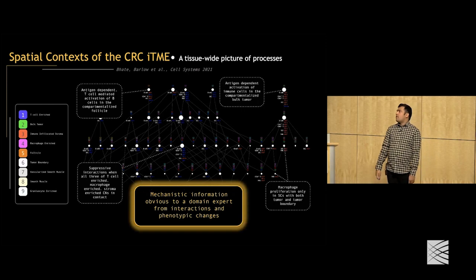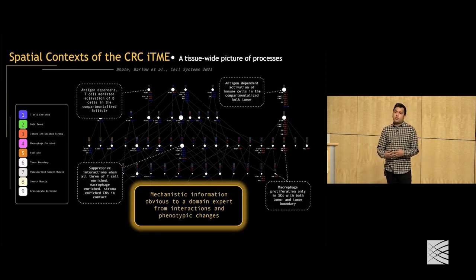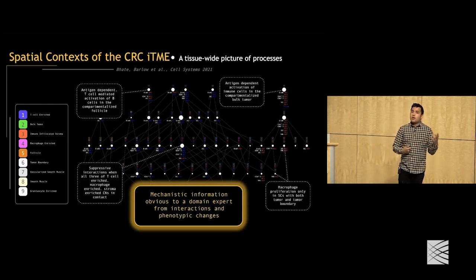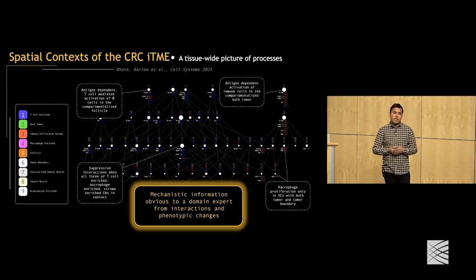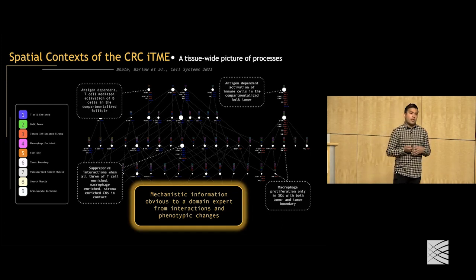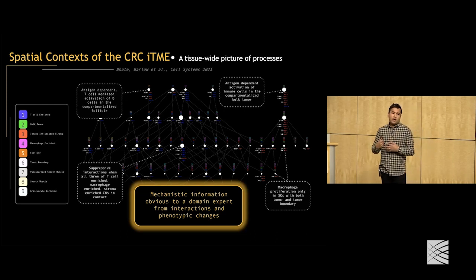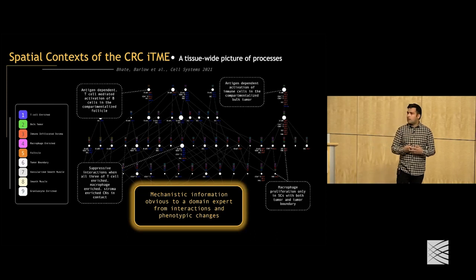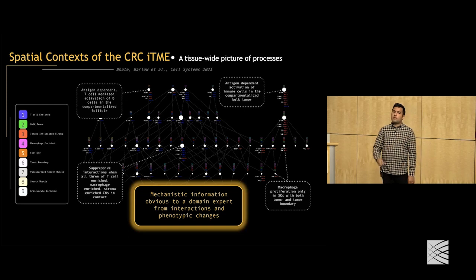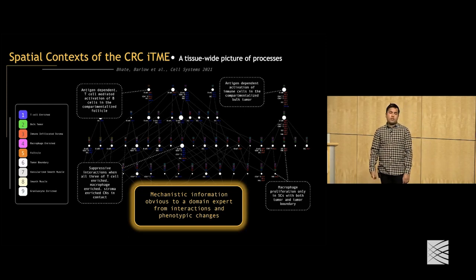In the colorectal cancer immune tumor microenvironment, we get a big map that we can start to explore, reading off based on the changes in cellular phenotypes what's going on in each spatial context. If you're an expert in tumor biology, knowing these combinations and the phenotypic changes occurring within them provides mechanistic information in terms of prior understanding of tissue biology.